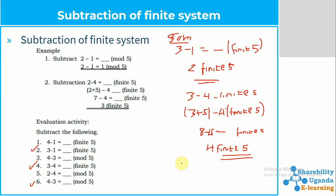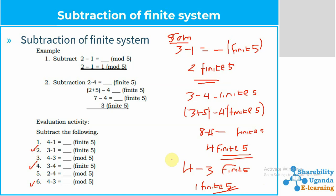For number six: 4 minus 3, mod 5. Since 4 is greater than 3, we subtract directly. 4 minus 3 gives us 1, so the answer is 1 mod 5.